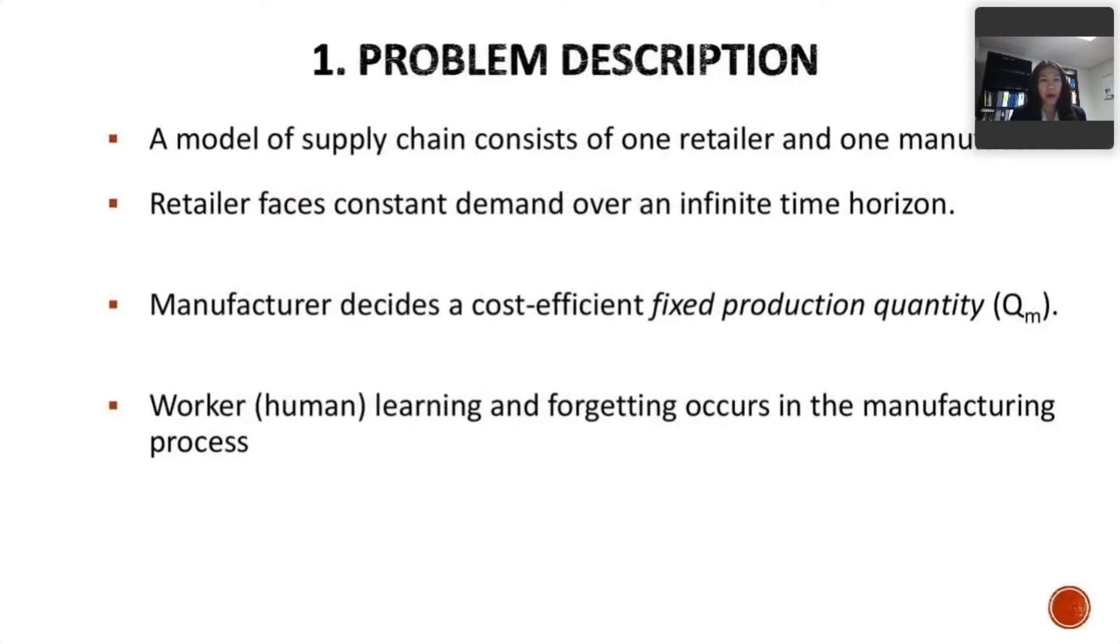So the problem, what is it about? We consider a two-stage supply chain which consists of one retailer and one manufacturer. We assume that the demand is constant over infinite time horizon. The retailer is assumed to face constant demand over an infinite time horizon. The manufacturer decides a fixed production quantity that is cost efficient. And we assume that worker learning and forgetting occur in the processing unit in a batch manufacturing environment.